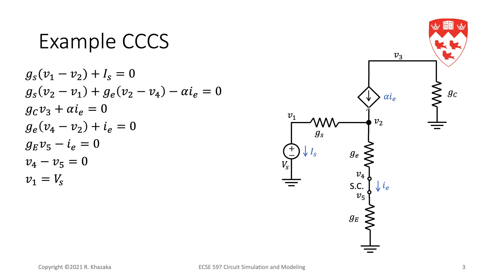We can see the impact of our controlled source. There were two separate contributions: first, we had to add the short circuit, giving us the short circuit stamp — a zero valued voltage source — which allows ie to be one of our variables. Then we add the contribution of the current source itself, which appears in the KCL equations at node 2 and node 3 where the current source is connected, as alpha times ie and minus alpha times ie.